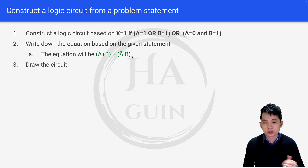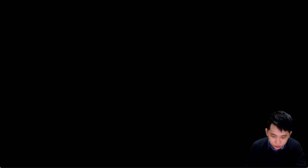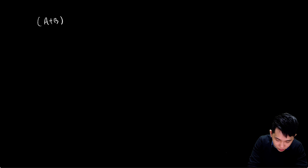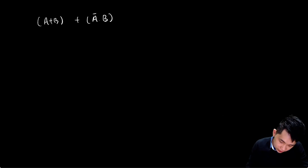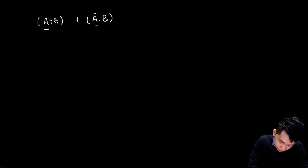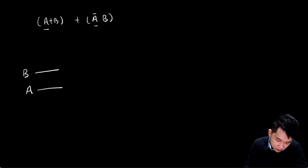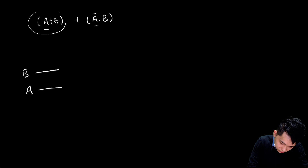Now I'll draw out the circuit with the equation written at the top: x = (a + b) + (a-inverse · b). Since we have both a and a-inverse, I'll put b first and a below it as inputs — because a will need to be inverted later. Starting with the first term, a + b, I'll draw an OR gate here. This is how you draw the OR gate.